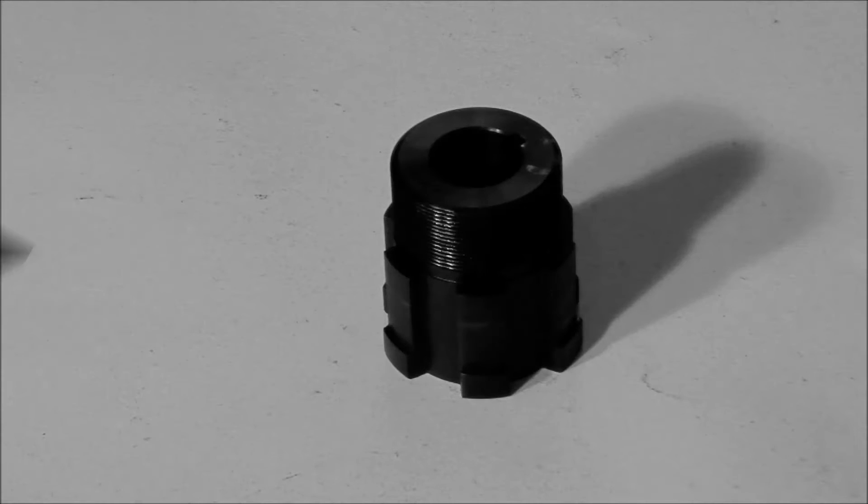We're going to start by assembling the torque limiter. This will normally come completed from the factory, but today we're going to show you the detail of how it goes together and some of the important things to watch for while assembling.